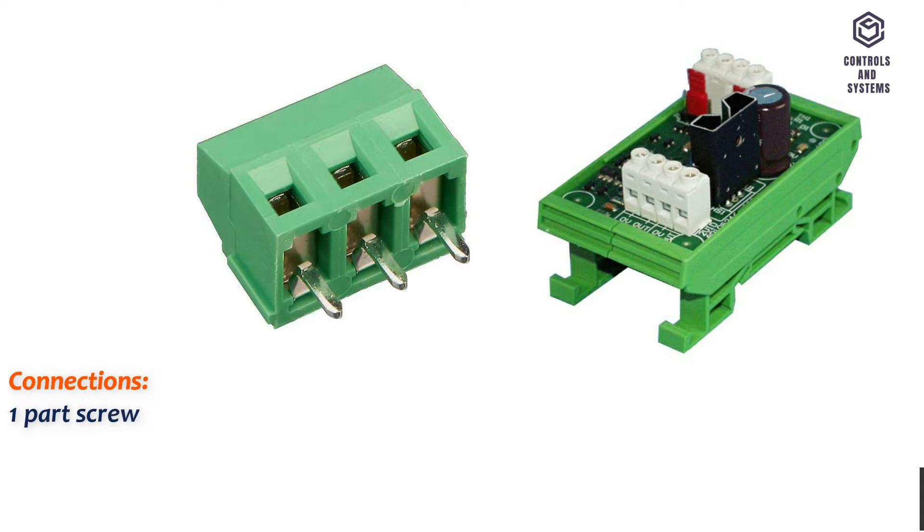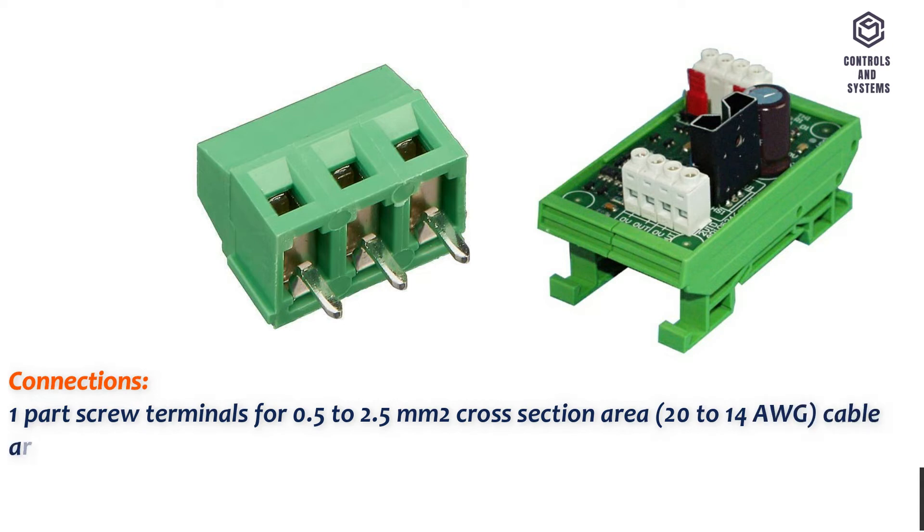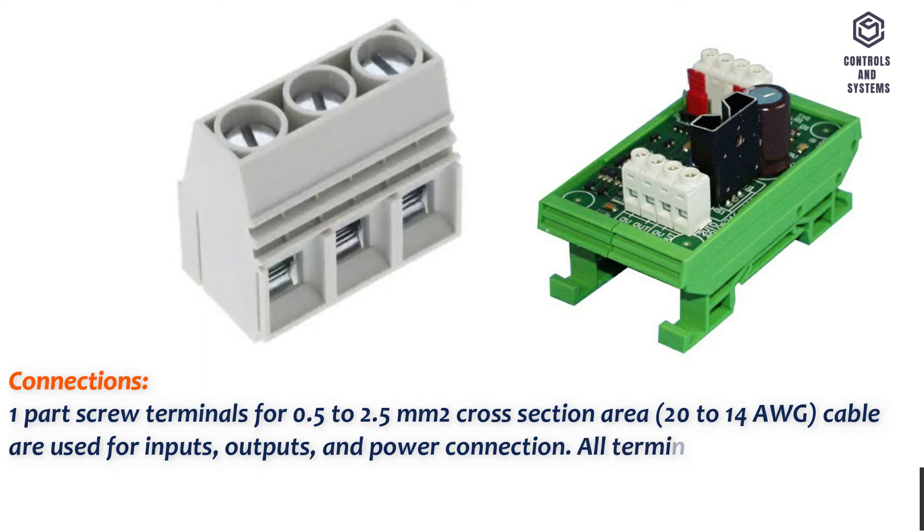Connections: One part screw terminals for 0.5 to 2.5 square millimeters cross section area, 20 to 14 AWG cable, are used for inputs, outputs, and power connection. All terminals are rising cage clamp type.